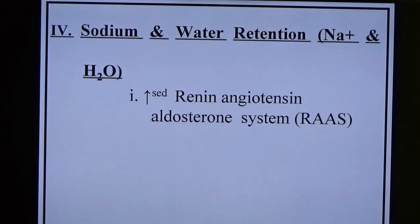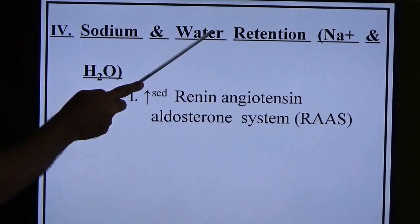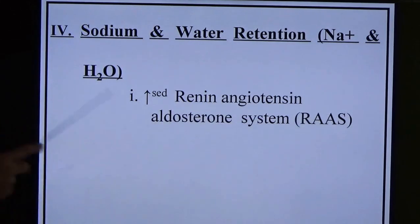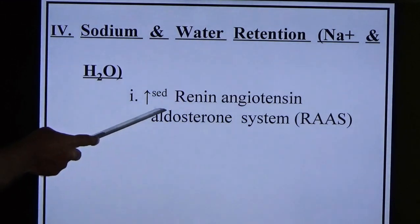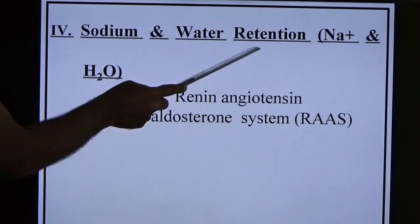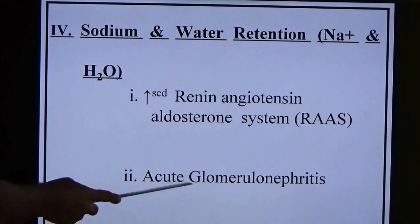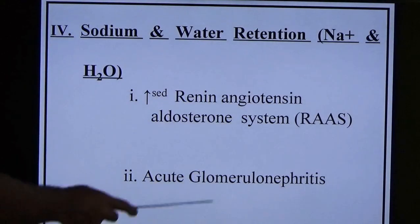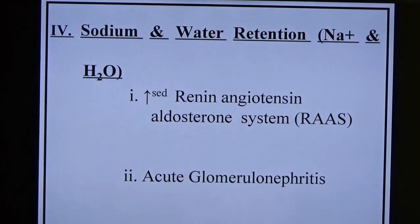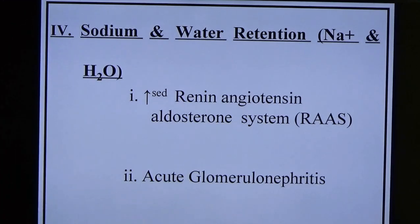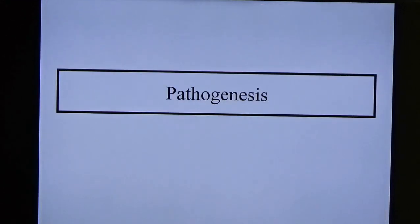Sodium and water retention: normally regulated by the renin-angiotensin-aldosterone system (RAS). When RAS is overactivated, excessive sodium and water are retained, leading to edema. Conditions include acute glomerulonephritis (inflammation of the glomerulus impairs fluid exchange, causing water accumulation) and renal hypofunction (kidneys fail to excrete sodium and water properly).